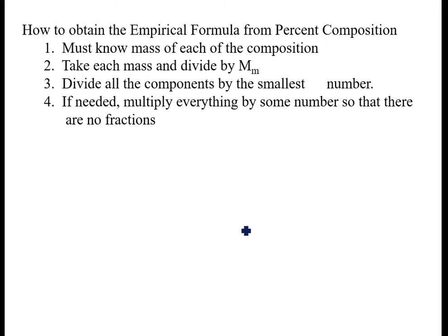The way that I do this is obtain the empirical formula from the percent composition. So I know the mass of each composition, or I take the percentages given and just make them grams, take each mass and divide by each atom's molar mass, then divide all the components from number two by the smallest answer I got in number two. And then if I don't have an even number, then I need to multiply it by some number.